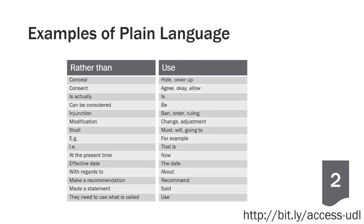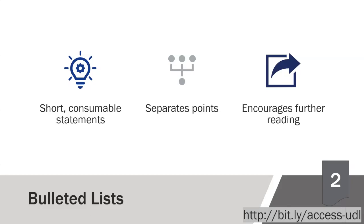There are some professional thesauruses out there — legal plain language thesauruses and the Center for Disease Control also has a great thesaurus for medical professionals with replacements for common words in the medical profession. Another way to simplify is to use bulleted lists. Long lists of items can be hard to read. Bullets can help put information into short, consumable statements. Bullets help to separate points or ideas. Finally, they can encourage further reading by embedding links. An example of an embedded link in a bulleted list is in the course handout on page two.